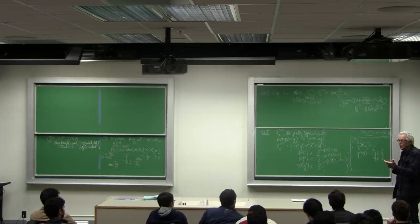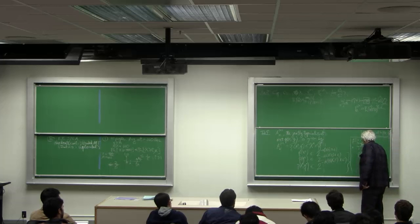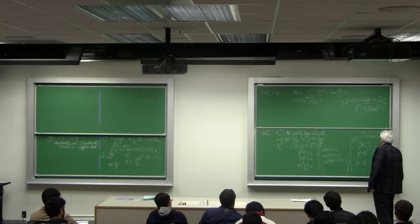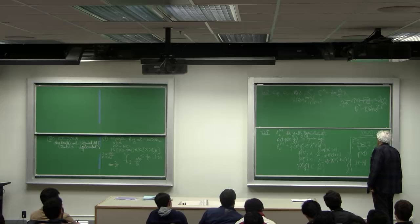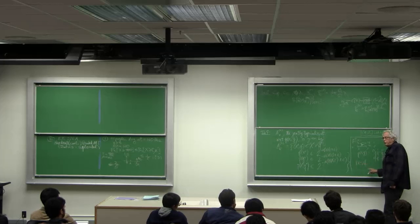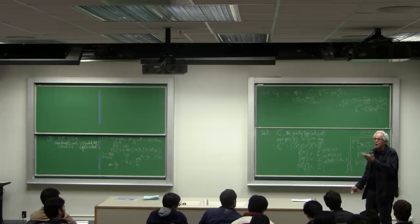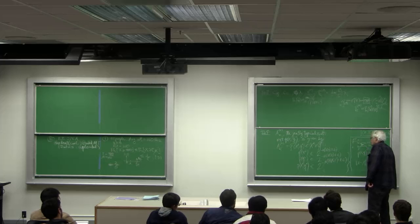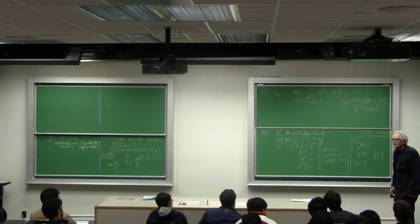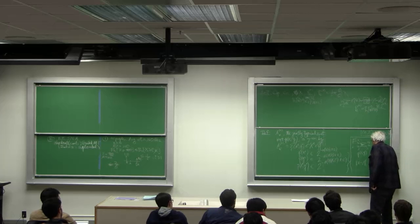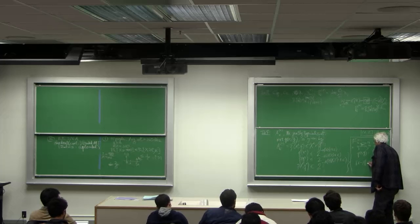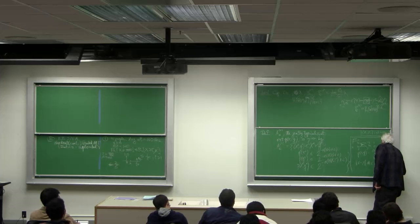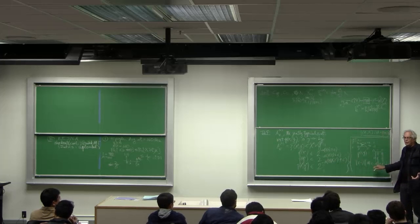To have x and y jointly typical you must have that x minus y, they differ in np places plus or minus epsilon prime. That is what is this euclidean distance, yeah euclidean distance equals hamming distance because 1 squared is 1. And so in the interval np plus or minus epsilon prime, that is from this epsilon you can see what it means for that one.